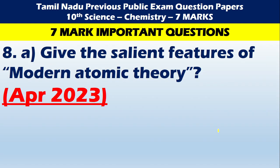Question 8: give the salient features of modern atomic theory. Key points include: same element may have different atomic mass (isotopes); different elements may have the same atomic mass; and mass of an atom can be converted into energy — that is, E = mc². In the 5th point, you will have to write that mark.